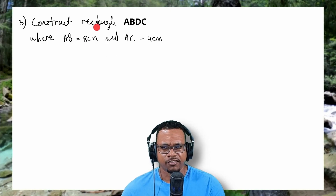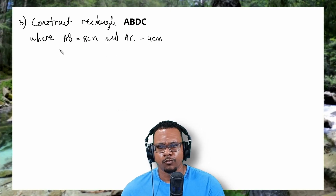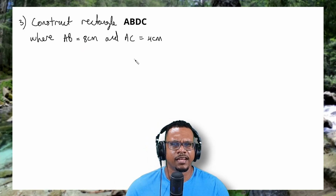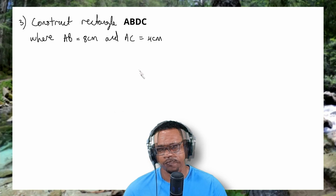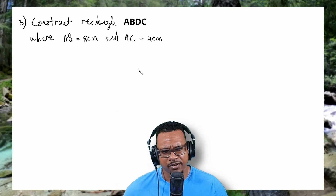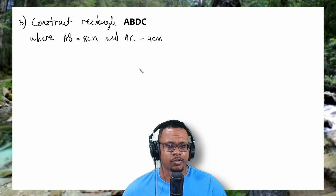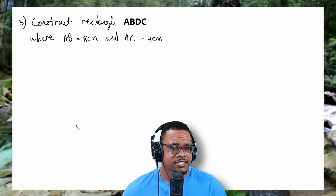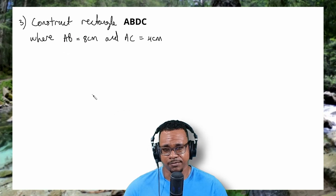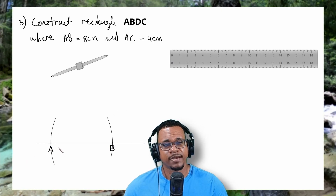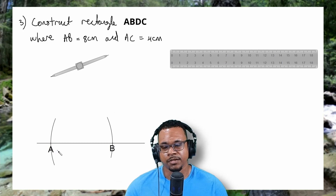In my third question, we're going to construct a rectangle ABDC, where the line segment AB is equal to 8cm and the line segment AC is equal to 4cm. Our rectangle has two pairs of parallel sides, and those parallel sides are equal in length. Also, the interior angles of a rectangle are equal to 90 degrees. I'll start by drawing my line segment AB being equal to 8cm. Just like the square, I'll construct my 90 degree angle at A and use the concept of parallel lines to construct the rest of the rectangle.